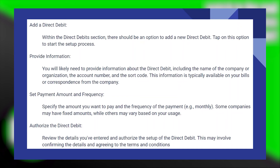Specify the amount you want to pay and the frequency of the payment, for example, monthly. Some companies may have fixed amounts, while others may vary based on your usage. Review the details you've entered and authorize the setup of the Direct Debit.